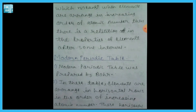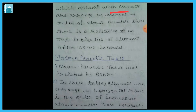So what does this law mean? Elements arranged in order of increasing atomic number show repeated properties after an interval. This is essentially the same idea that Newland had given — the theory is the same, just now based on atomic number instead of atomic mass.